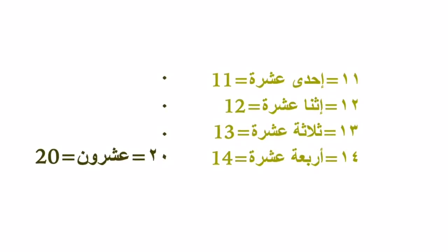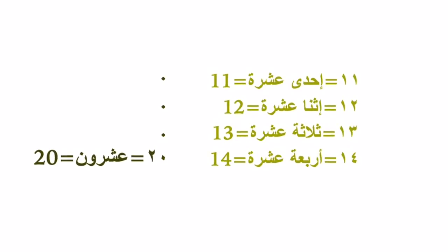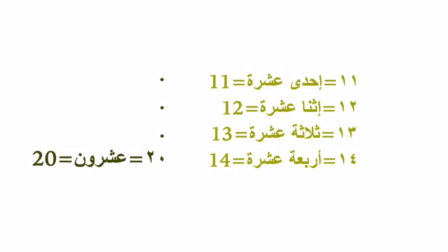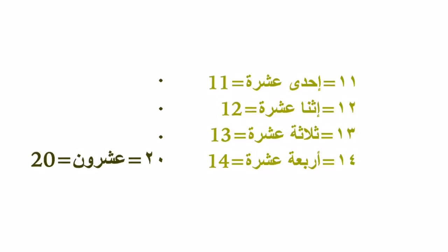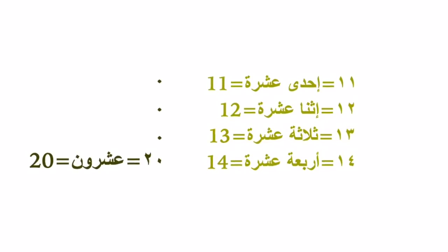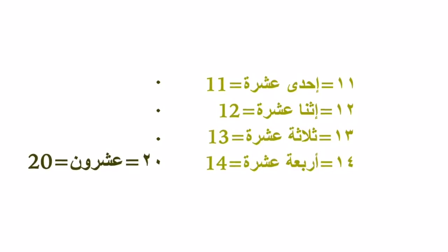From thirteen to nineteen it's the same pattern. Thirteen: ثلاثة عشر. Fourteen: أربعة عشر. Fifteen: خمسة عشرة. Sixteen: ستة عشرة. Seventeen: سبعة عشرة. Eighteen: ثمانية عشرة. Nineteen: تسعة عشرة. And twenty: عشرون.